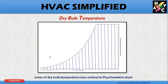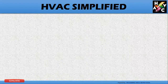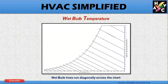Dry bulb temperature lines run vertically on the psychrometric chart. Wet bulb temperature lines run diagonally across the chart.